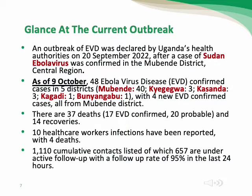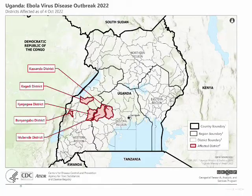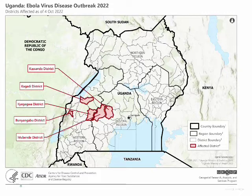There were 37 deaths — 17 Ebola virus confirmed and 20 probable — and 14 recoveries. Ten healthcare worker infections were reported with four deaths. There were 1,110 cumulative contacts listed, of which 657 are under active follow-up with a 95% follow-up rate in the last 24 hours. Looking at the map, the outbreak was concentrated in the western and central districts of Uganda.